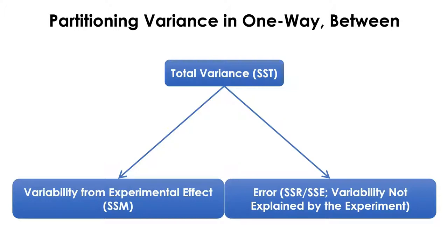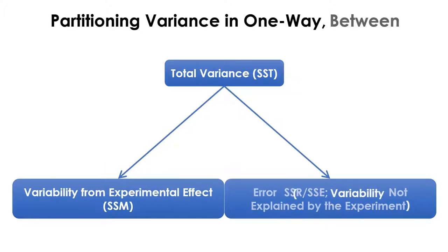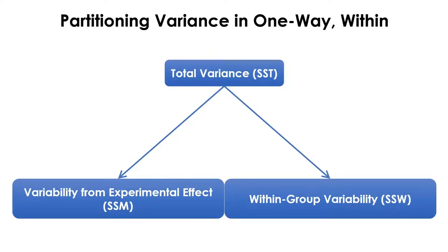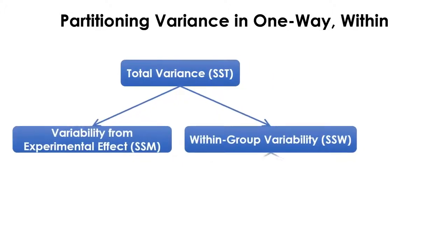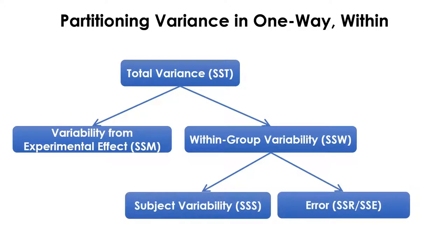What we have here is how variances are partitioned in one-way between-subject ANOVA. The error term here is called within-group variability, called SSW. In one-way within-subject ANOVA, this within-group variability is further partitioned into subject variability and an error term.